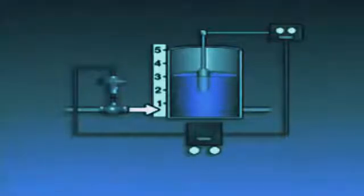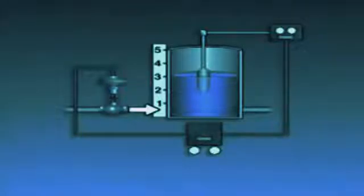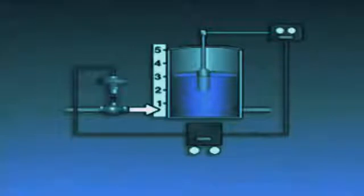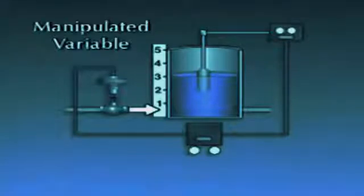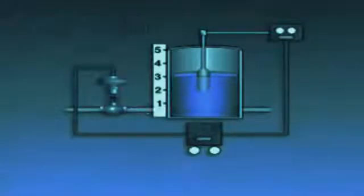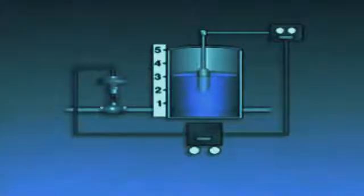In this system, the water level is controlled by regulating the flow of water into the tank. For that reason, the flow of water into the tank is called the manipulated variable. As with all automatic control systems, this system has four basic parts or elements.